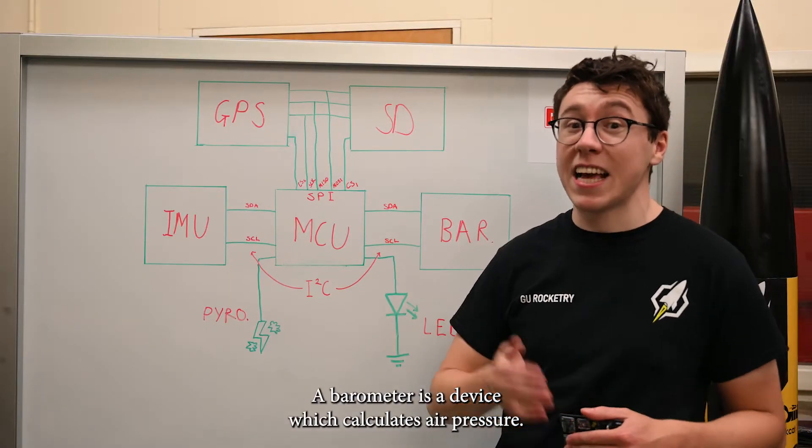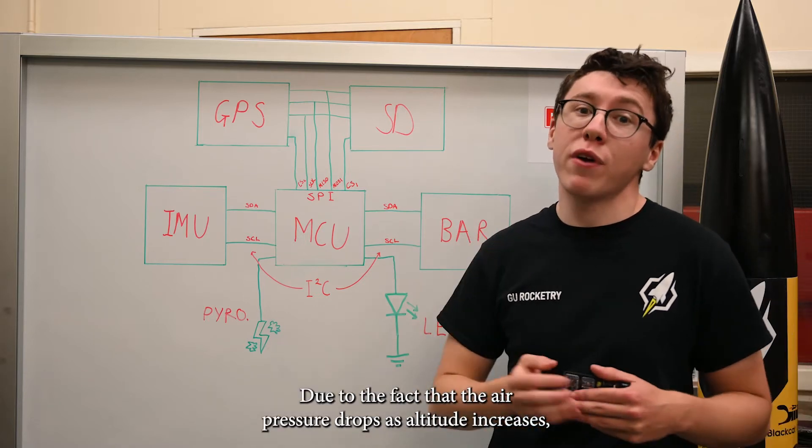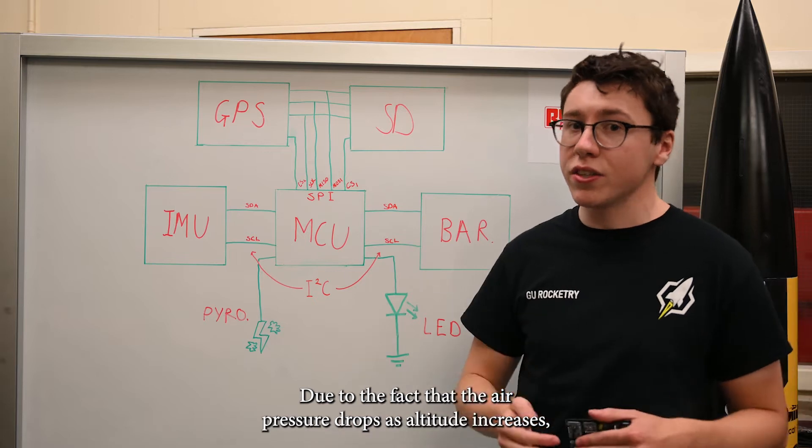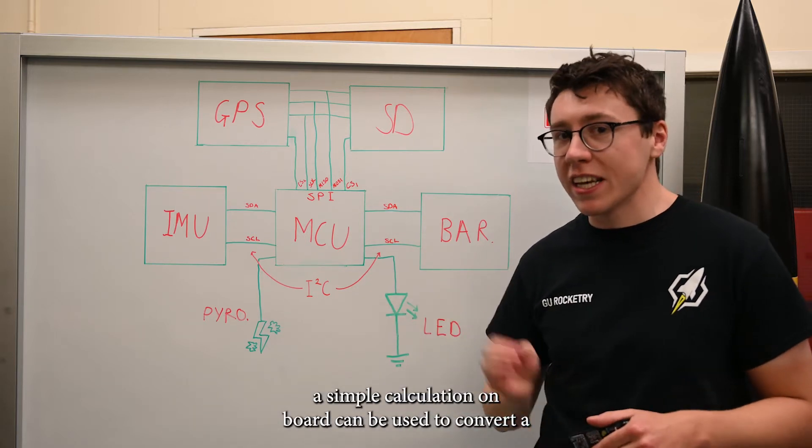A barometer calculates the ambient air pressure. And using the rule whereby the air pressure decreases when the altitude increases, we can perform a quick calculation on board giving us the altitude.